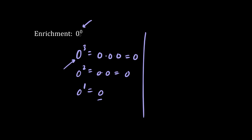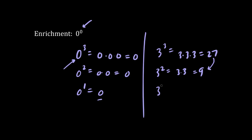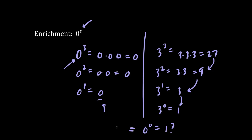However, when the exponent is 0, such as 3 cubed, which is 3 times 3 times 3 = 27, and 3 squared is 3 times 3 = 9. We divide by 3. 3 to the 1 is just 3. We divide by 3. And 3 to the 0 is 3 divided by 3, which is 1. Anything to the 0 is 1. So 0 to the 0 — is it 1 or is it 0? We can't make up our mind, so we say the answer is undefined.